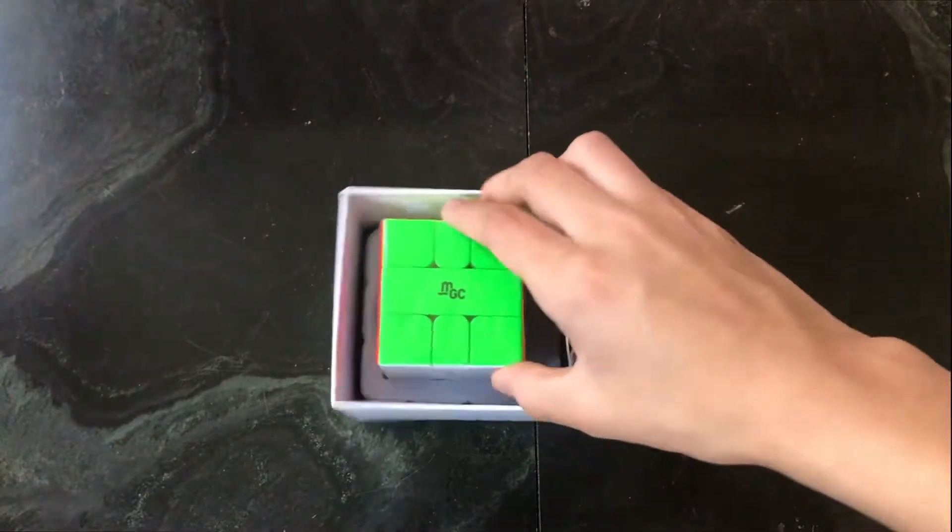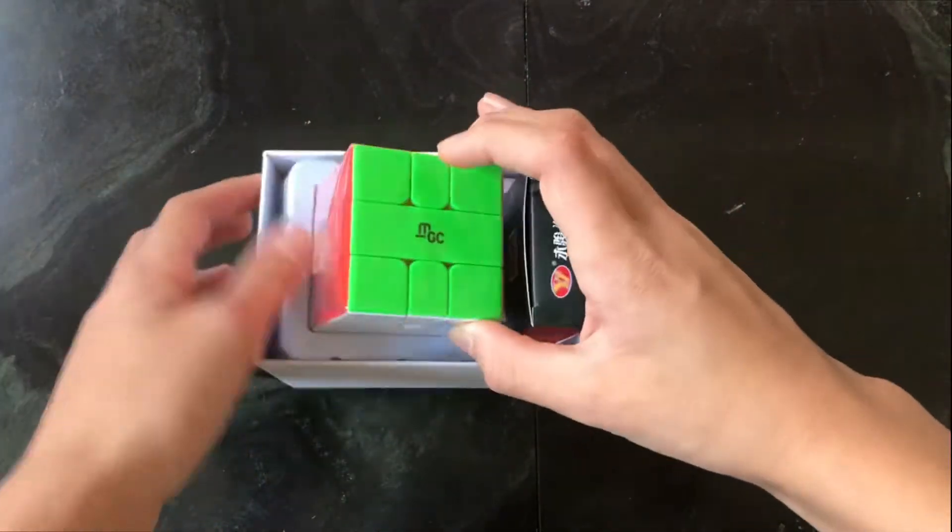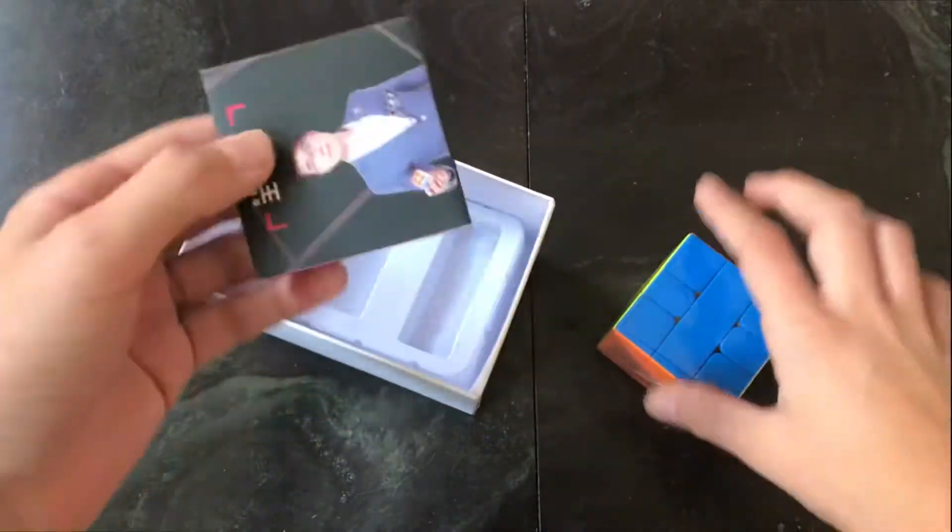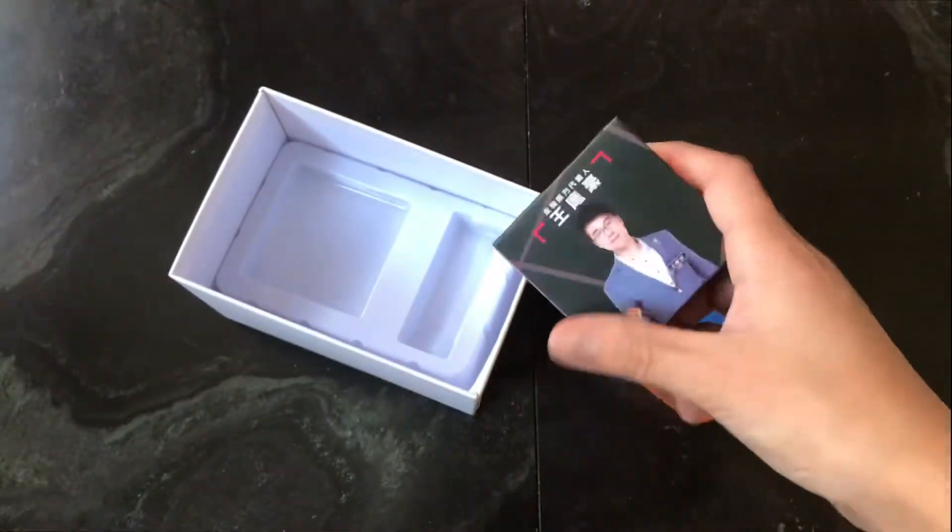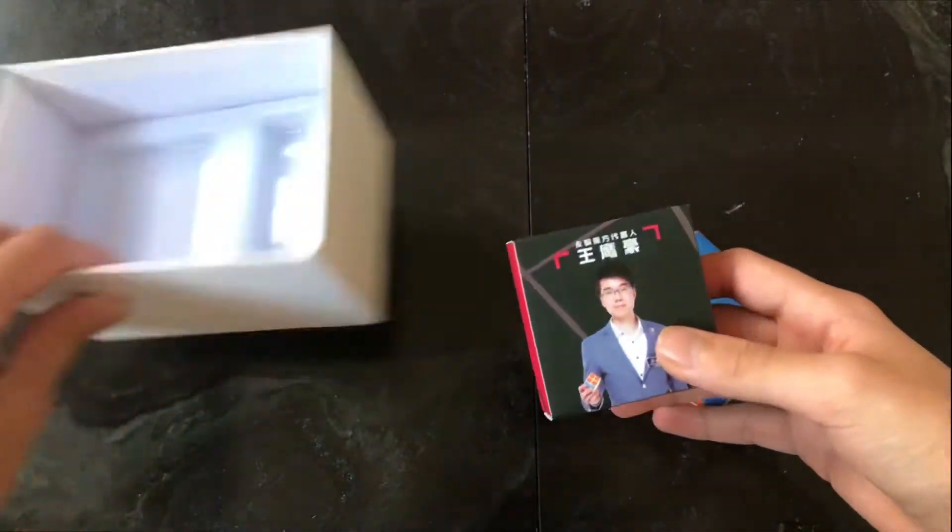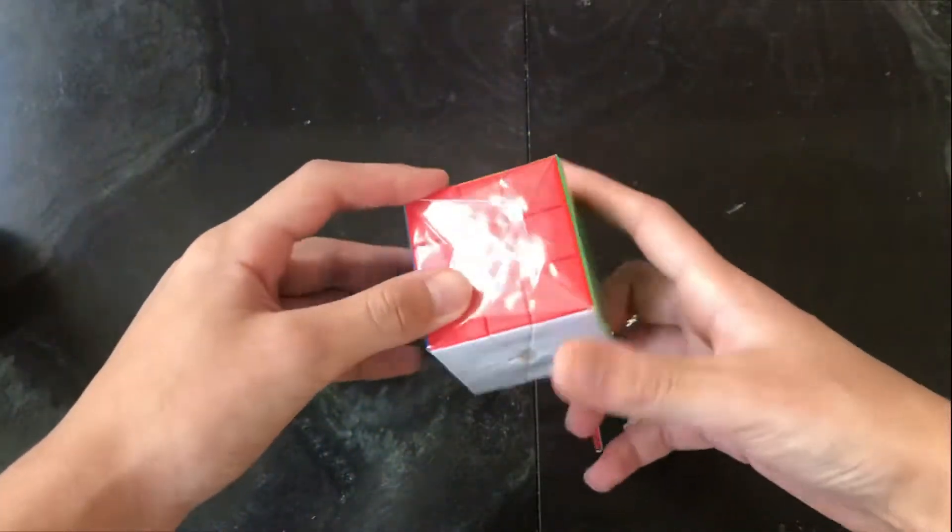Okay, so we've got the MGC Square One right here and we've also got this accessory box. Let's just move that out of the way and we're going to unbox the main puzzle.